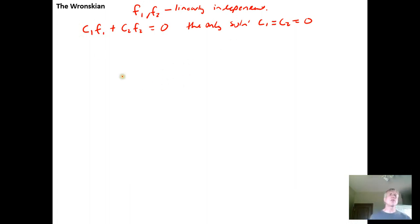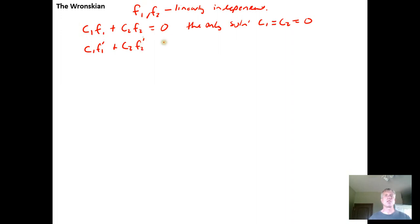What we're going to do next is take the derivative of both sides of this with respect to x. Since c₁ and c₂ are just scalars, we get c₁f₁′ + c₂f₂′ = 0. We want to recognize that this is a system of two equations in two unknowns, c₁ and c₂.